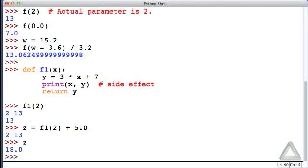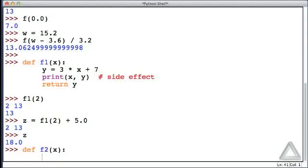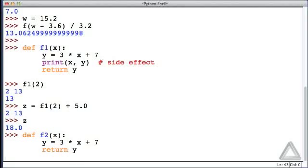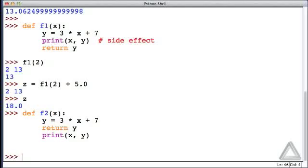Now let's create another function that's very similar to f1, and in this case we'll call it f2. f2 still has a single argument that we'll call x. We'll still assign to y 3 times x plus 7, but now we'll return that value, and then we'll have the print statement. So we'll print x, y, and there's our function.